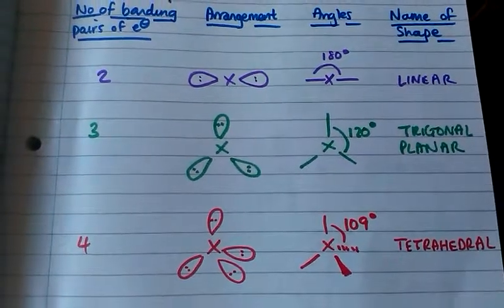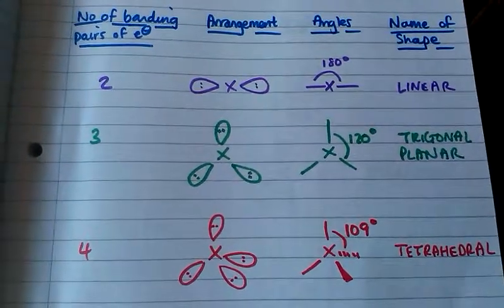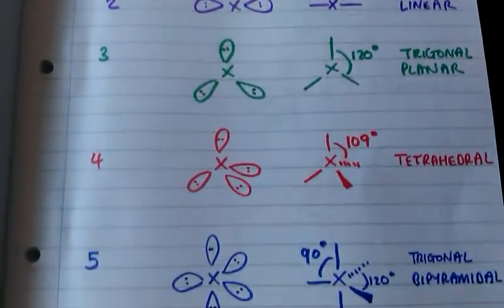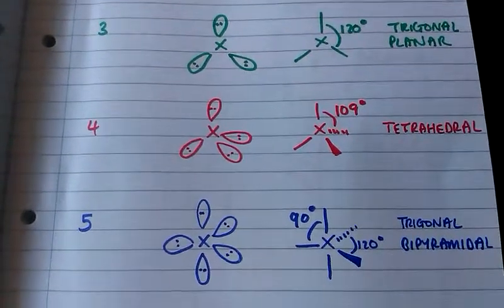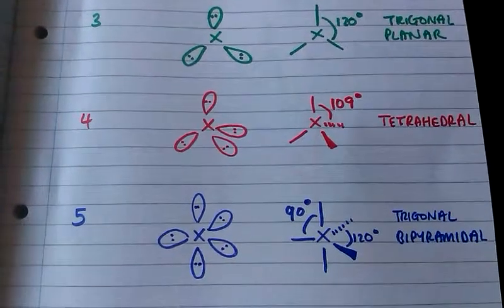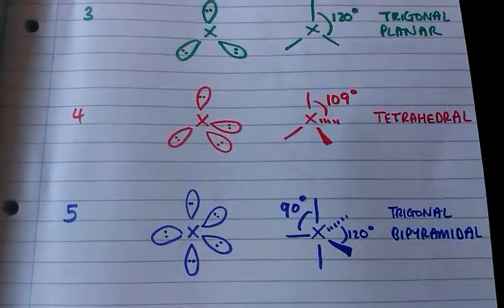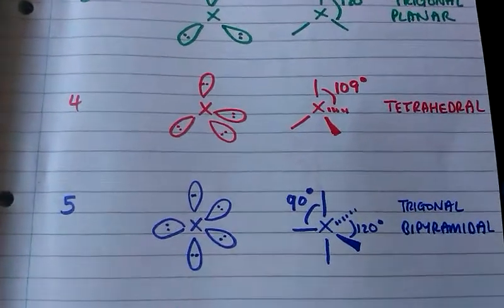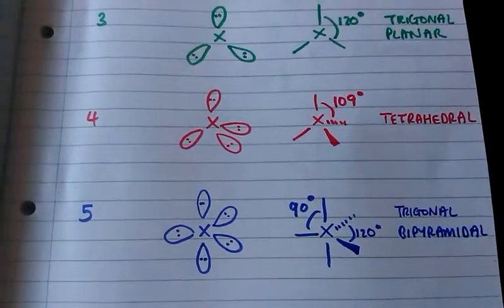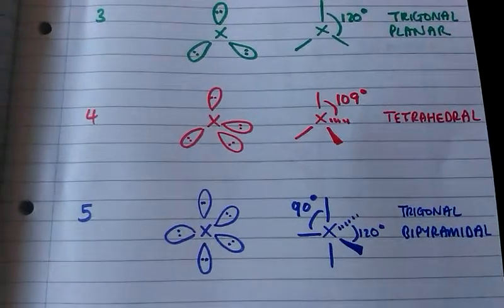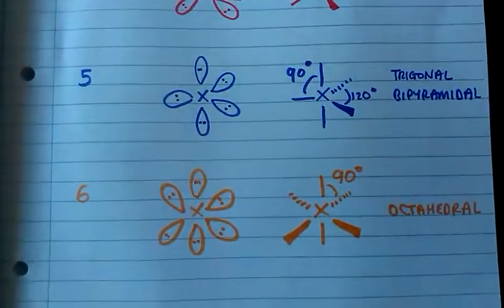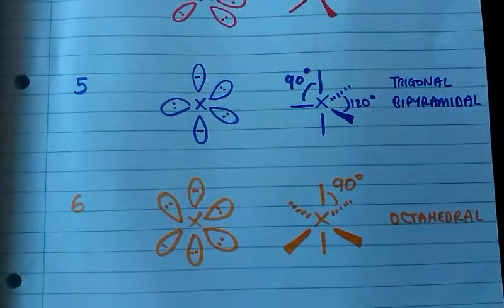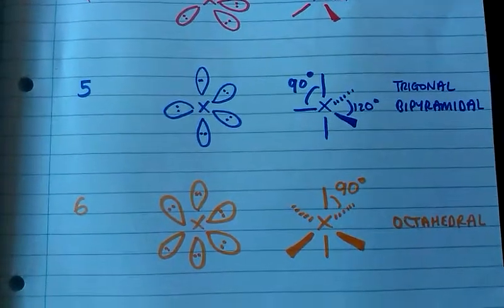When there are four bonding pairs of electrons, the bond angle is 109 degrees and that shape is called tetrahedral. When there are five bonding pairs of electrons, there are actually two different bond angles: one is 90 degrees and the other is 120 degrees, and that shape is called trigonal bipyramidal. Finally, when we have six bonding pairs of electrons, the bond angle is 90 degrees and that shape is called octahedral.